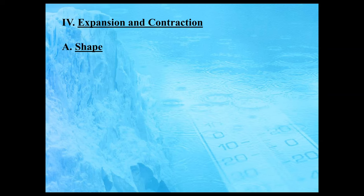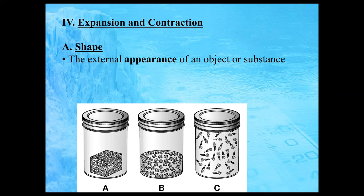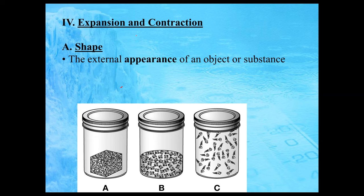Let's start off by giving a definition for the shape of a substance. In this diagram, we have our three primary states of matter. In container A, you'd have a solid. In container B, you'd have particles that make up a liquid. And in container C, you'd have particles that make up a gas. The shape of a substance is the external appearance of an object or a substance. We're going to describe the shape using one of the following two words — the first word being 'definite.'